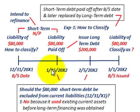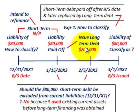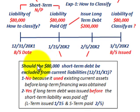Looking at our timeline: on 1-15-20X2, we pay off our notes payable of $80,000. We paid it off with the intention of issuing some long-term debt — say a bond — and we issued this long-term debt for $200,000 on 2-5-20X2, after the liability was paid off. We had issued enough — $200,000 — to cover our liability of $80,000.